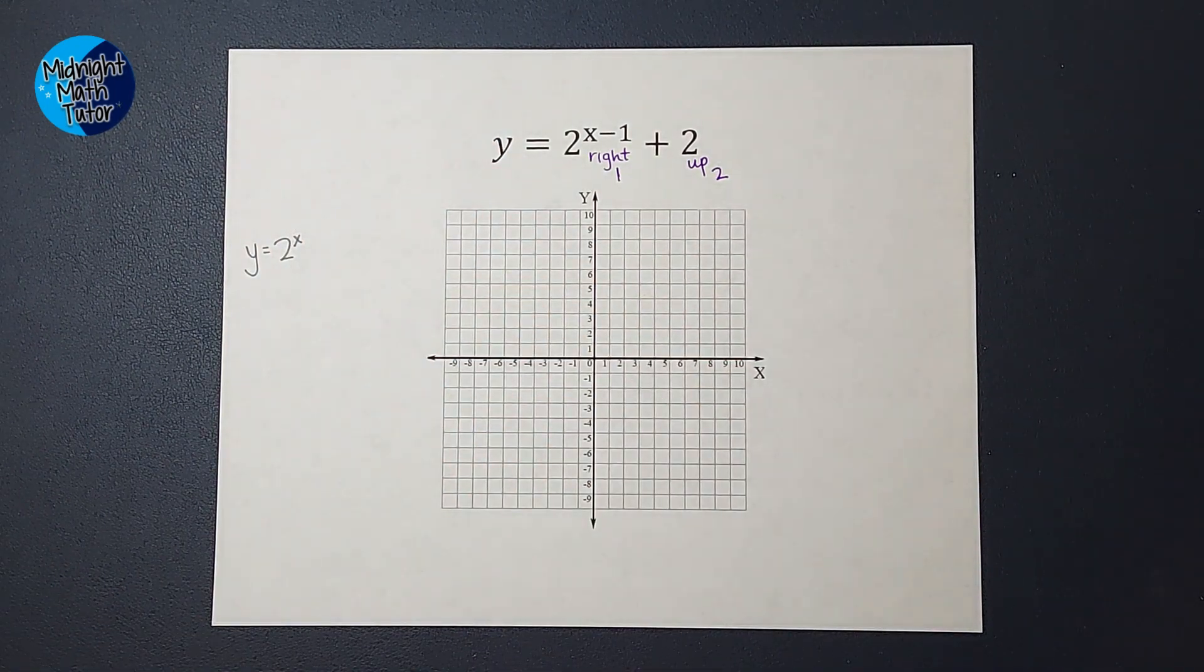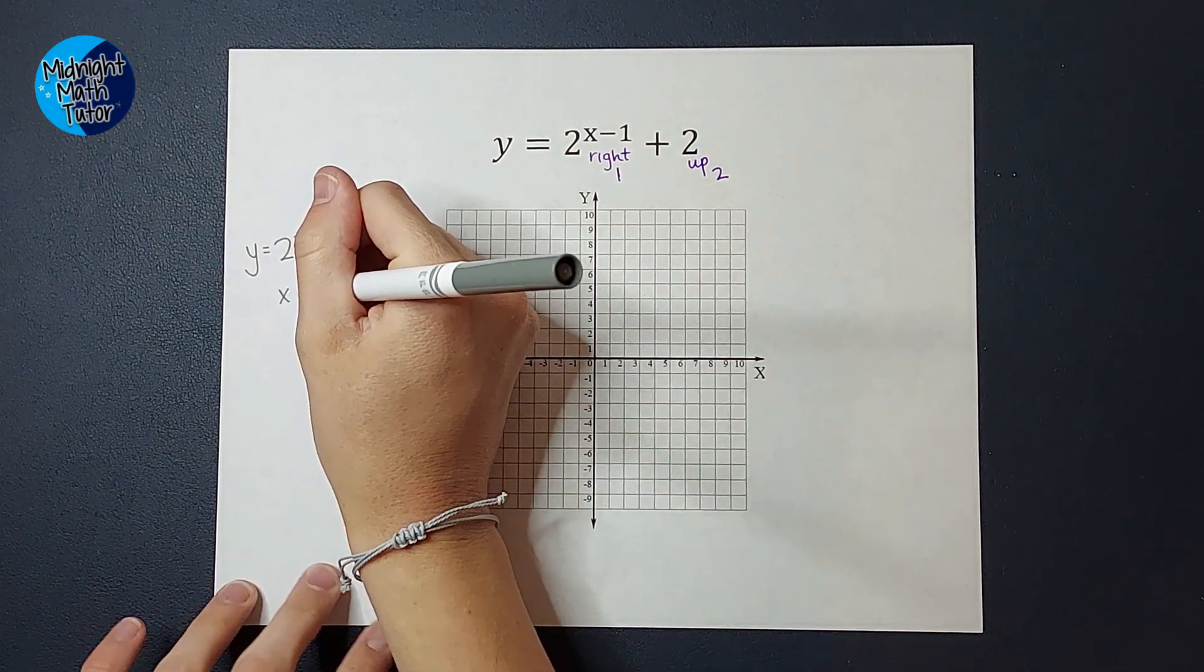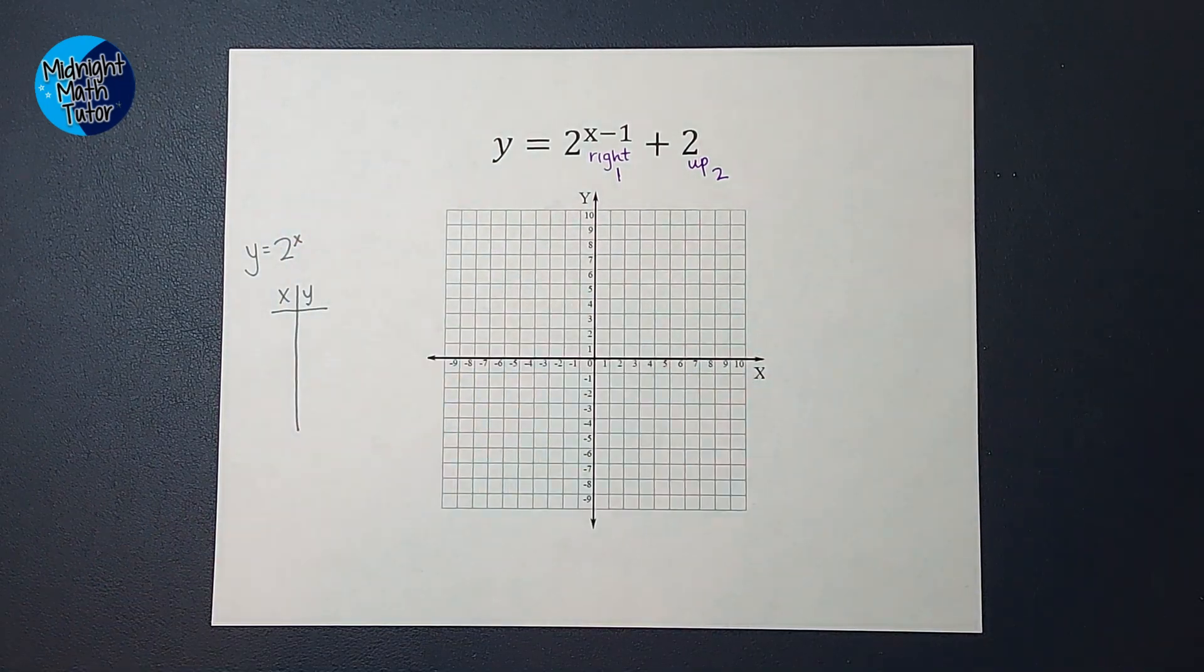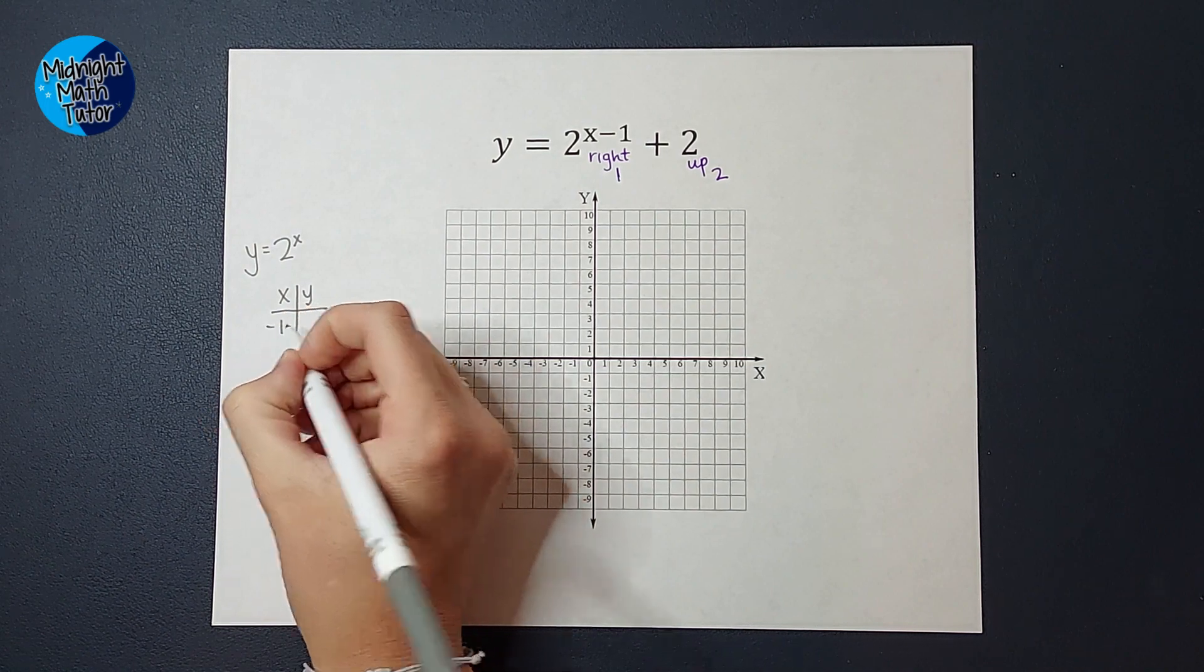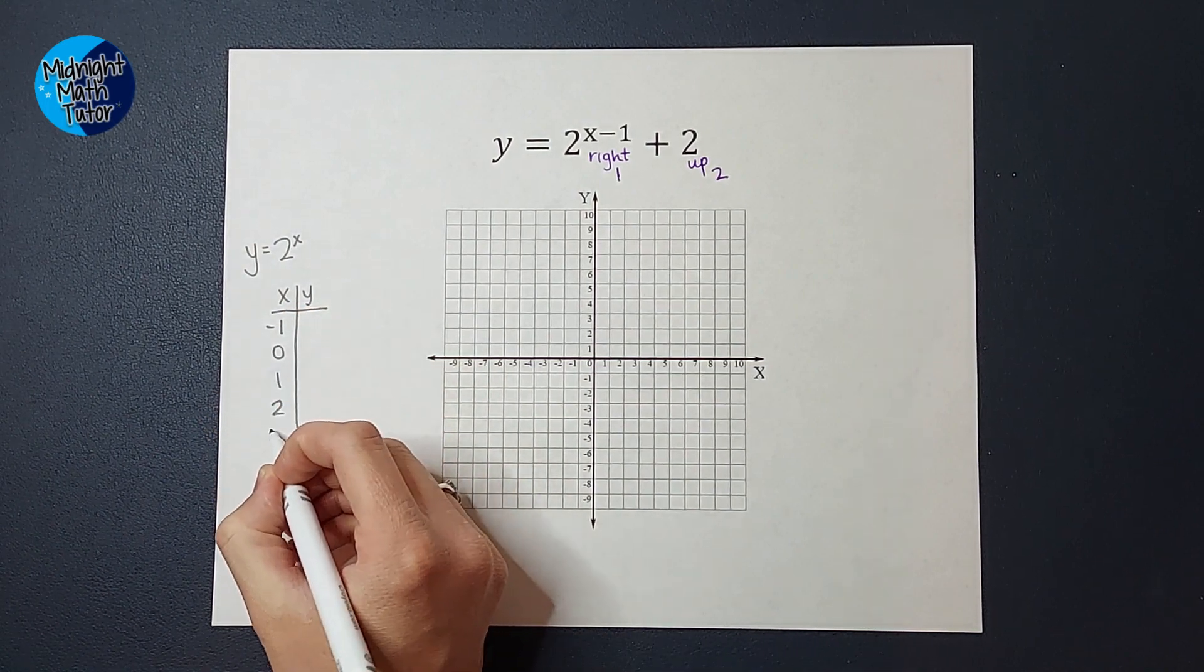Now I'm going to make a table to see what this graph looks like. Now as you do this more and more, you may be able to figure it out pretty quickly what the parent graph looks like. Until then, do your table. So we're going to plug in negative 1, 0, 1, 2, and 3.